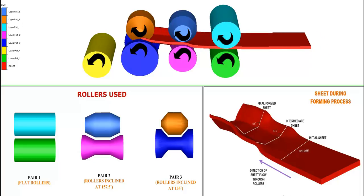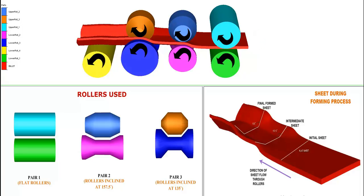The first pair is the flat die at 100 degree angle. The second pair is inclined at 157.5 degrees and the third is inclined at 135 degrees. On the bottom right shows the sheet under deformation, which shows the three deformed regions under the three pairs of dies.